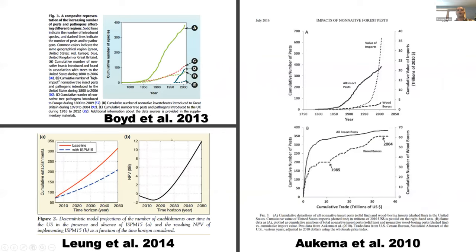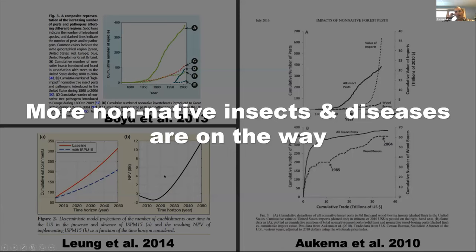Native pests like pine beetles are also becoming more severe in parts of the West due to climate change, with impacts on carbon sequestration. Looking forward, the situation is not great. Aukema et al. 2010 shows the number of insect pests is increasing, and wood-boring insects — the most severe — are actually accelerating in recent decades. Boyd et al. found a similar trend. Even maintaining current preventative regulations like ISPM 15, new pests and pathogens will arrive. It's a matter of when, not if.